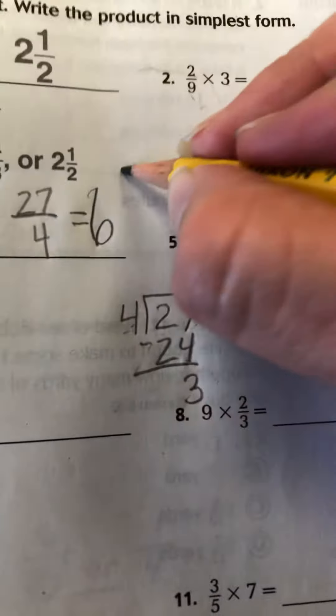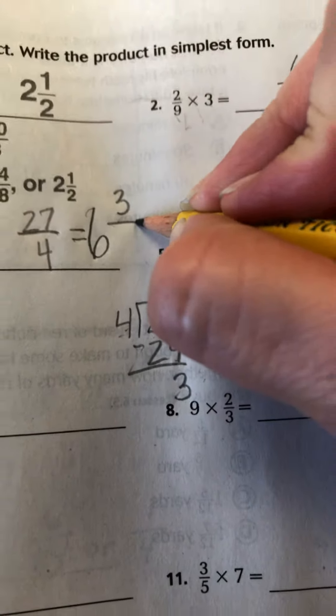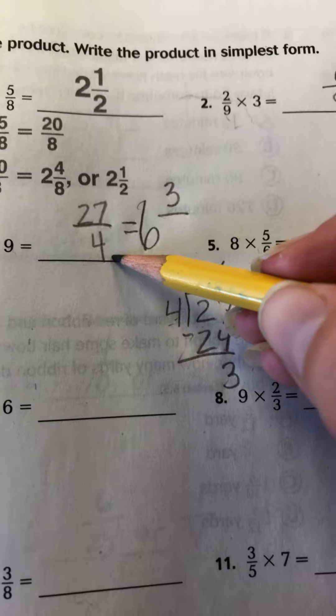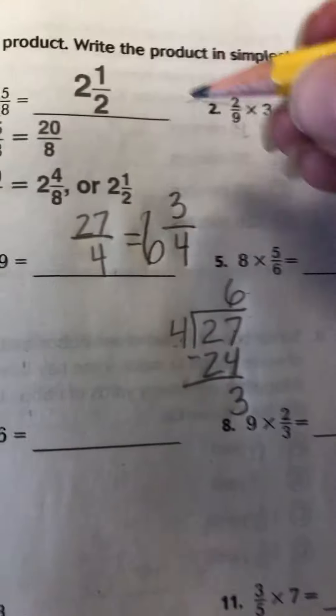So that 3 becomes my numerator. And then my denominator stays the same. So 6 and 3 fourths.